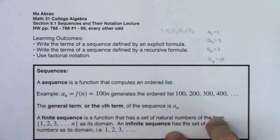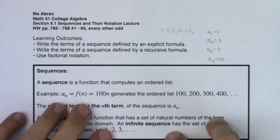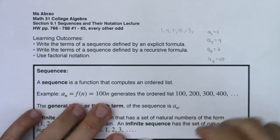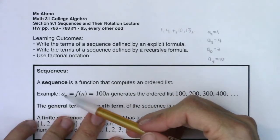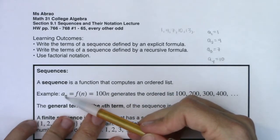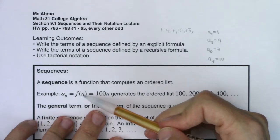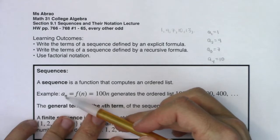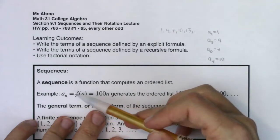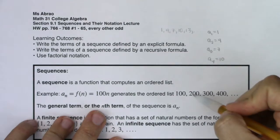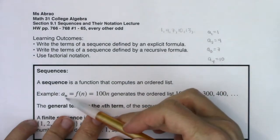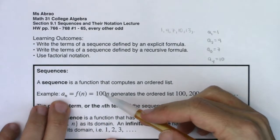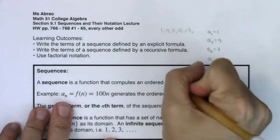A sequence is a function that computes an ordered list. For example, we might have a sub n defined by the function 100 times n. If I find a sub 1, that's the function evaluated at 1, which is 100 times 1, or 100. If I find a sub 2, n is 2, so 100 times 2 is 200. a sub 3 would be 100 times 3, which is 300. And a sub 4 would be 100 times 4, which is 400.